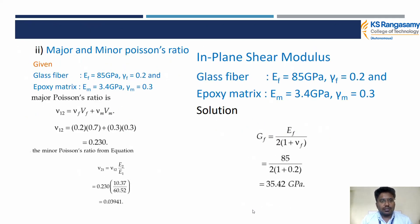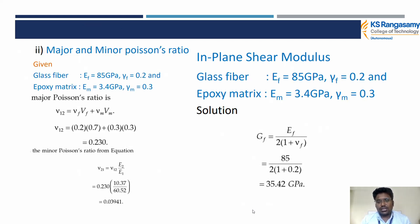Similarly, we calculate the major Poisson ratio: ν12 = νf·Vf + νm·Vm = 0.2×0.7 + 0.3×0.3 = 0.230. Next, the in-plane shear modulus of the fiber uses: Gf = Ef / [2(1 + νf)]. Substituting, the in-plane shear modulus Gf = 35.42 GPa.